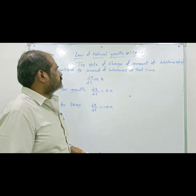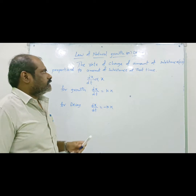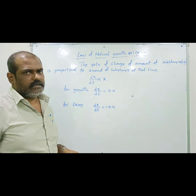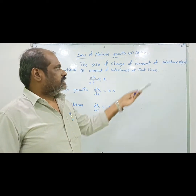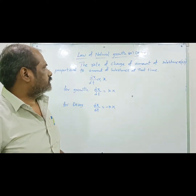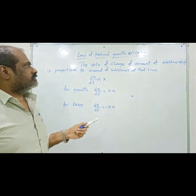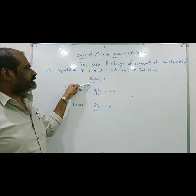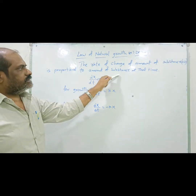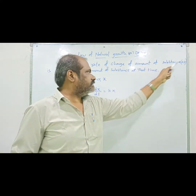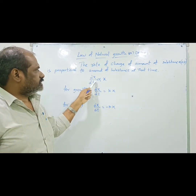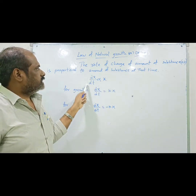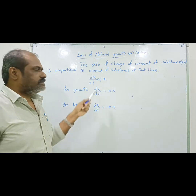Law of natural growth or decay: the rate of change of amount of substance is proportional to the amount of substance at that time. If we let the amount of substance be x, then the rate of change is dx/dt, which is proportional to x. This is the mathematical explanation of the law of natural growth or decay.